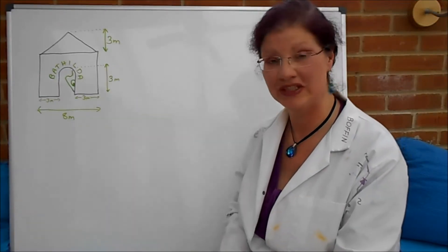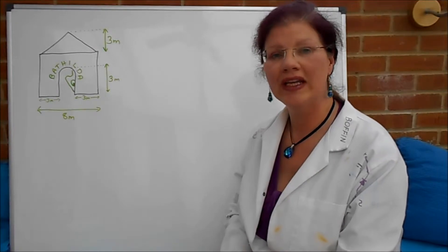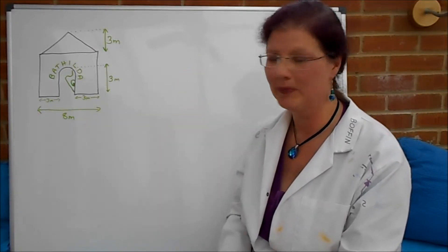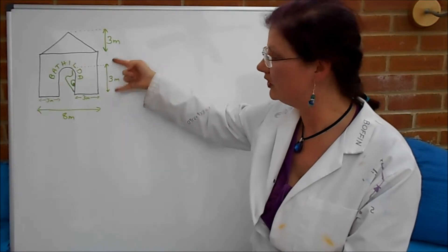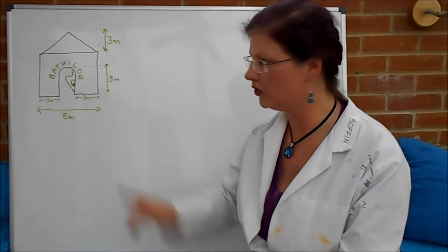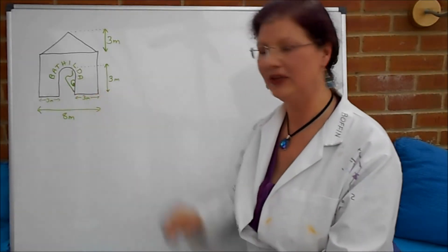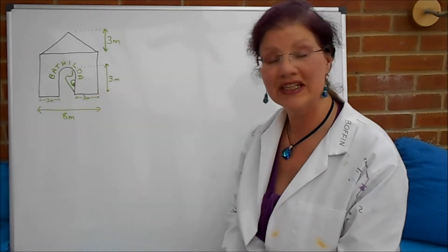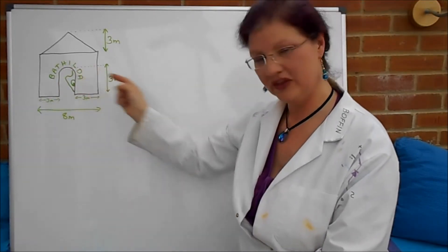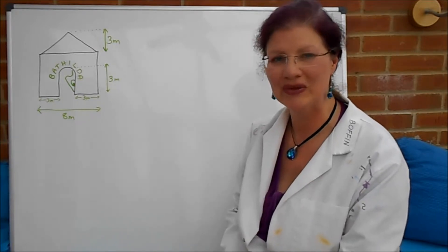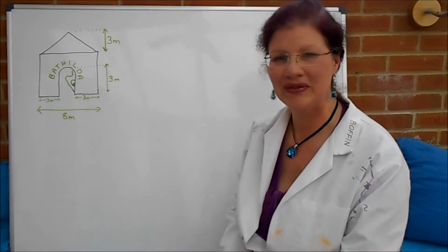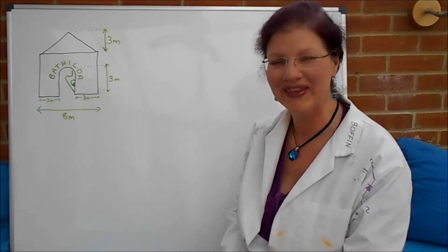Now for part B we're looking at the doorway to Matilda's house. The doorway is made of two vertical sides with a half circle over the top and we have some dimensions. The total height of the doorway to the very top is three meters. The width of it we're not told but we are told that it's three meters on either side. So what I'd like you to do for part B is to work out the distance all around the arch shape of her doorway. So that's from the ground over the top and down to the ground on the other side. Have a go at that now.